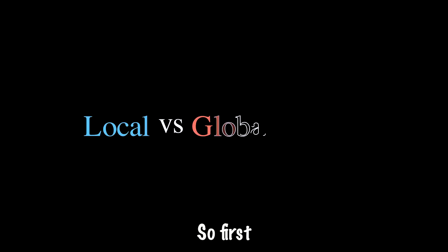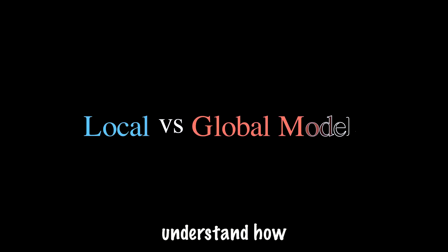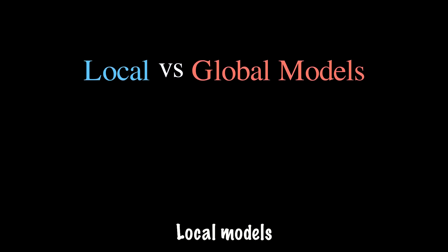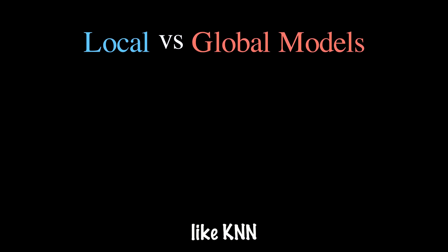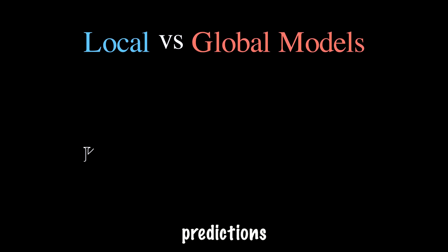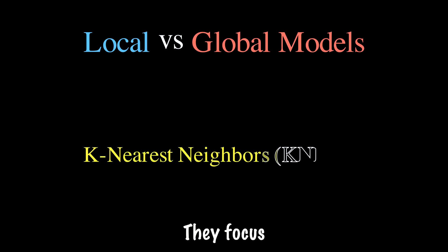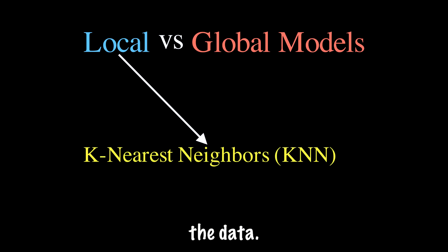Local versus global problem. Let's understand how different models perceive data. Local models like KNN — K-nearest neighbors — make predictions based on nearby data points. They focus on the local structure of the data.